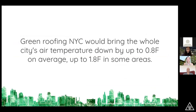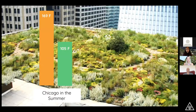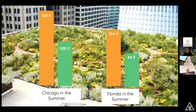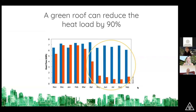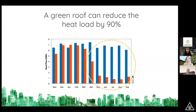One study showed that if we did as much green roofing as would be viable in NYC, it would bring the temperature down by up to 1.8 degrees Fahrenheit on average. Many of you realize that one degree on average is actually a really big deal. Here's one in Chicago — you can see this really big change after they put the green roof on. Another one in Florida dramatically lowered the surface temperature of the roof since adding the green roof.